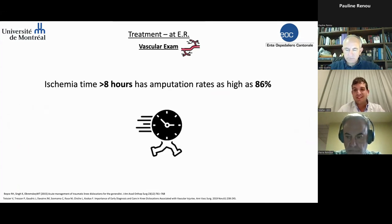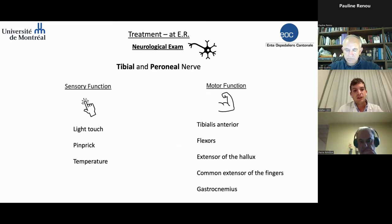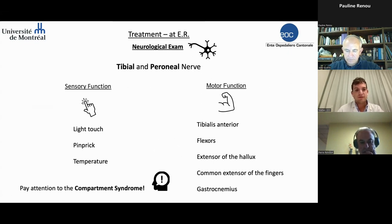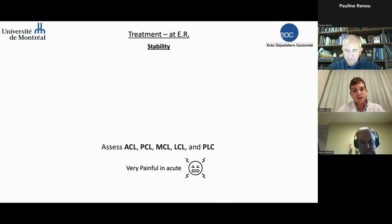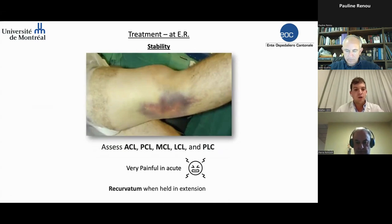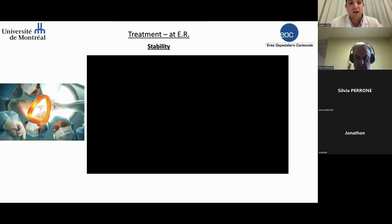It's important to do a careful neurological examination for sensitivity and motility. Pay particular attention to compartment syndrome always. Evaluation of all ligaments is essential for diagnosis and operative planning, but this is often not possible in the acute setting — very painful. For example, a recurvatum deformity probably indicates a lesion of the PCL and the posterolateral corner. It's easier to have a better assessment with the patient under narcosis, but unfortunately we can only do that when already in the operating room.